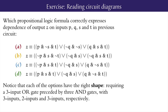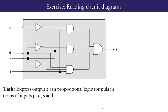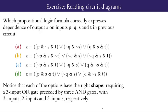Which of these propositional logic formulas correctly express the dependence of Z on the inputs P, Q, S, and T in the previous circuit? Notice that each of the options have the right shape, a size 3 disjunction of conjunctions, where the conjunctions are of size 3, 2, and 3, respectively.